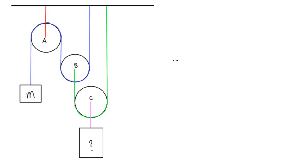We're looking at a problem with tension and multiple pulleys. We have three frictionless pulleys. There's a mass with a blue cable stretched over the pulleys and connected to the non-moving ceiling. Pulley A is supported with a red cable, and pulley C uses a green cable that comes down off of pulley B and connects up to the roof.